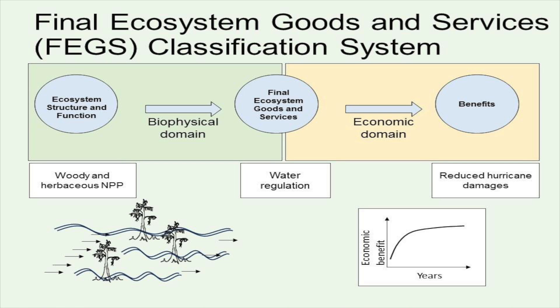We next need a means of converting these biophysical parameters into economic parameters. The final ecosystem goods and services classification system is conducive to this type of analysis because it explicitly links and differentiates between ecosystem structure and function, the final ecosystem goods and services — or the ultimate biophysical entity that produces human value — and then finally, human benefits.